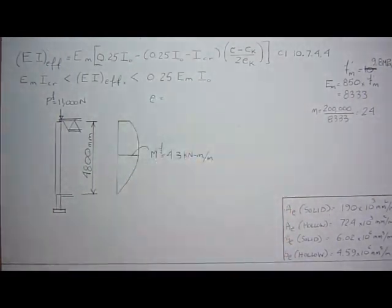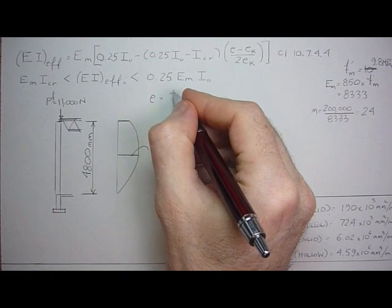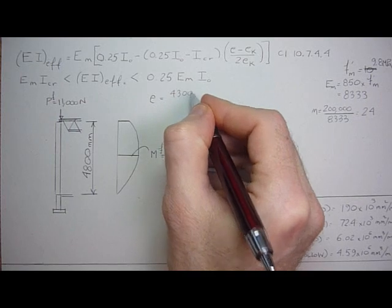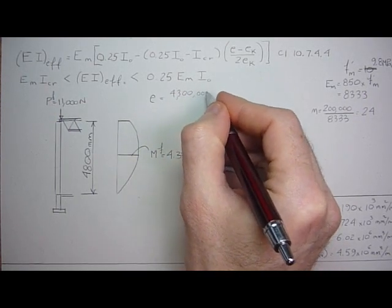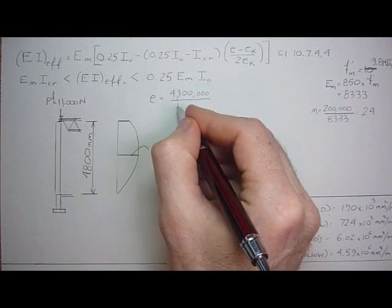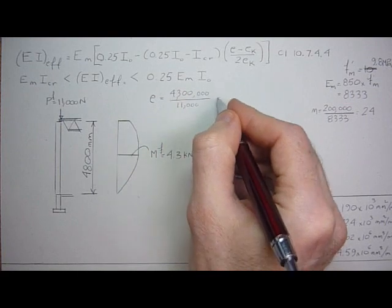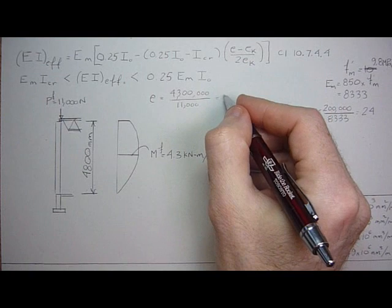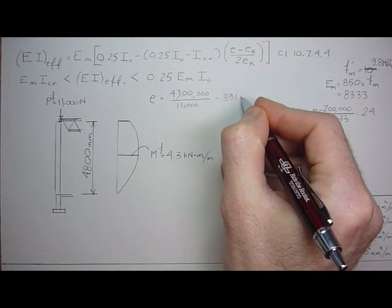The eccentricity is straightforward. It's just going to be the factored moment, the unamplified factored moment, which is 4,300,000 newton millimeters over the 11,000. The eccentricity is 391 millimeters.